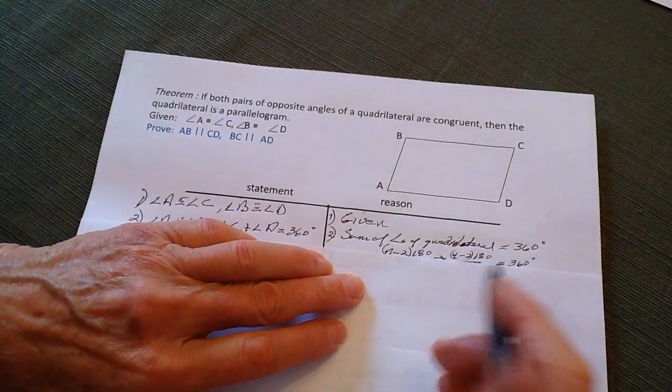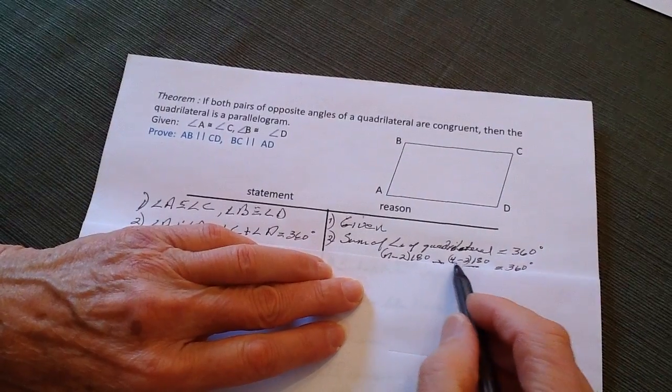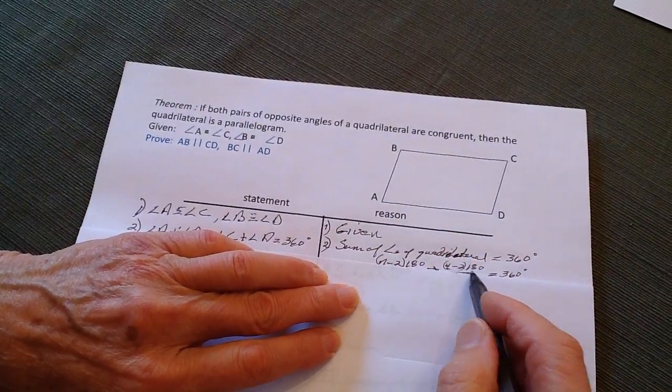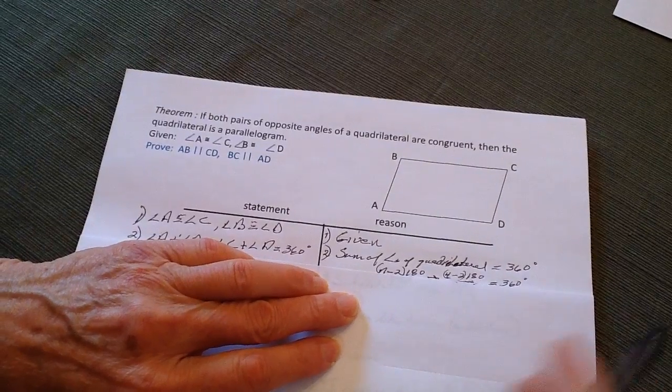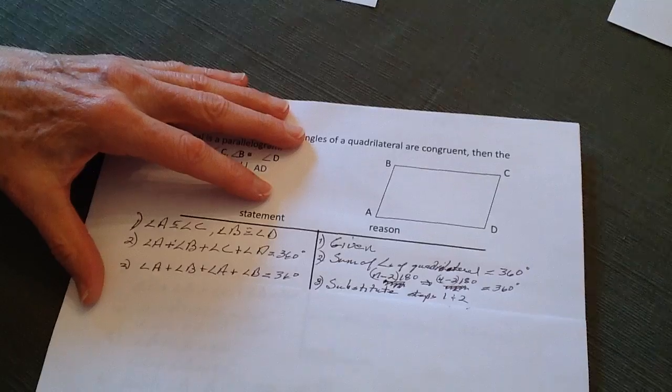We also remember the little formula of n minus 2 times 180. So if I put 4 in here for n, which is the number of sides, minus 2, that's 2 times 180, that is 360. Next, I go down here, and now I'm going to substitute.